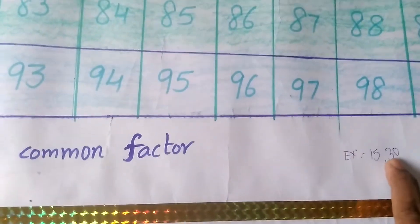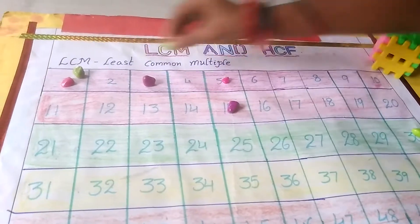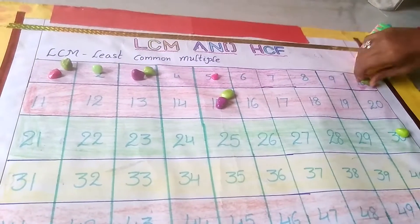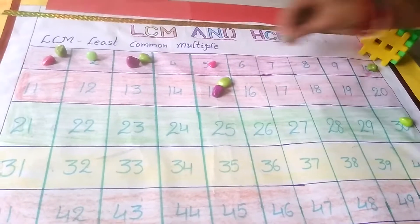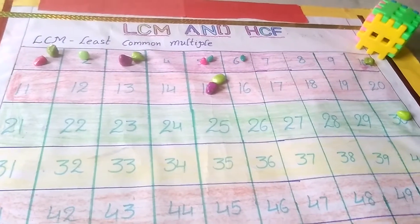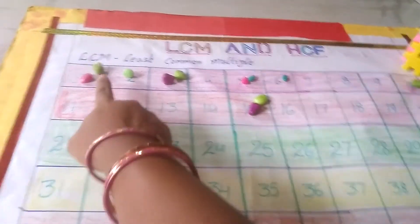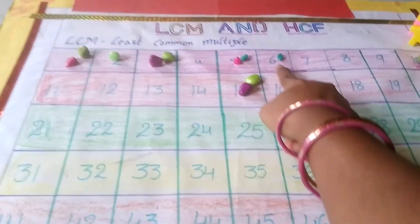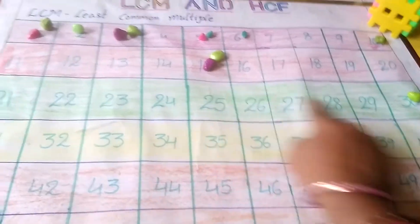The other number is 30. Factors of 30: 1×30, so 1 and 30. In the 2 times table, yes — 2 and 15. In the 3 times table, 3 and 10. In the 4 times table, no. In the 5 times table, 5 and 6. 6 is repeating, so we stop. The factors of 30 are 1, 2, 3, 5, 6, 10, 15, and 30.